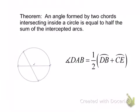Tomorrow we're going to start talking about angles and arcs formed by chords, secants, and/or tangents. The first thing we're going to look at is angles formed by two chords. Our theorem tells us that the angle formed by two chords inside a circle is equal to half of the sum of the intercepted arcs.